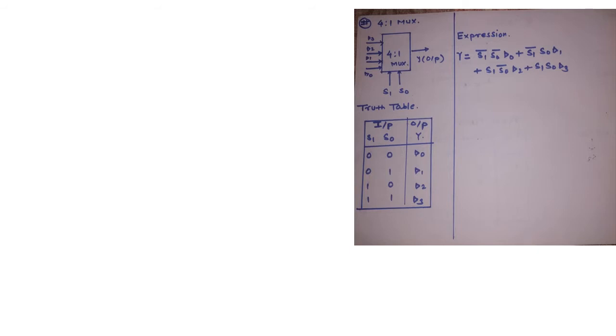Here we are accepting 4 inputs and the decision of which input to be treated as an output is taken by the select lines s1 and s0. Depending on the truth table where the select line is 00, 01, 10, or 11, our outputs are connected with the lines d0, d1, d2, or d3.